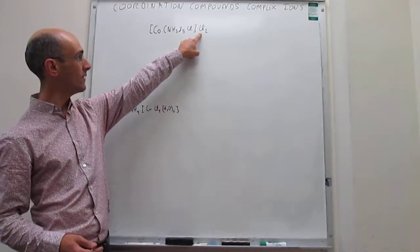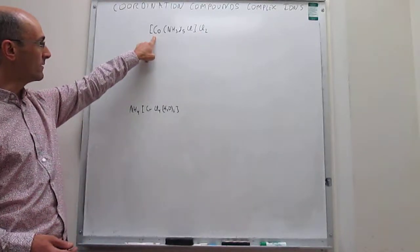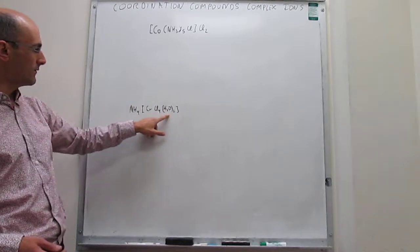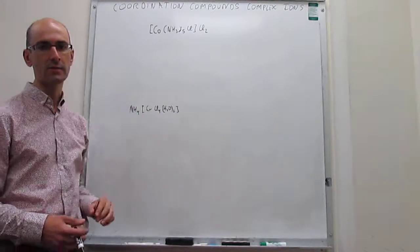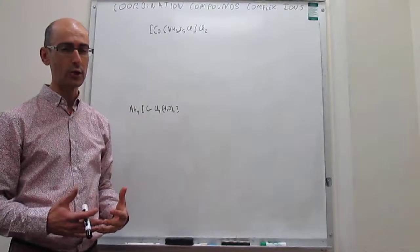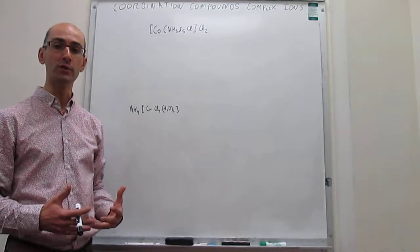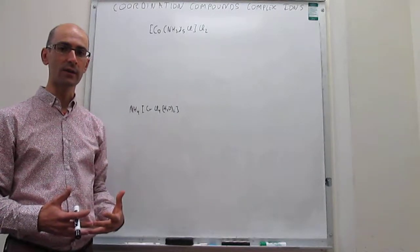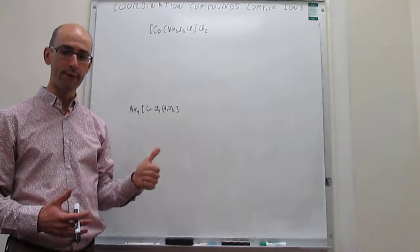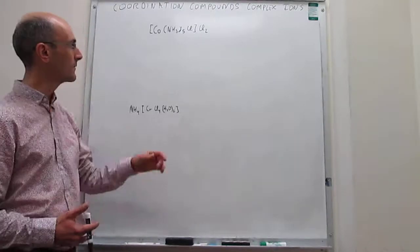In this case, those are the counter ions and this is the complex ion; and over here you have the complex ion and that is the counter ion. These are all ionic compounds, and you're going to name them exactly the same way as you would an ionic compound: first the cation, then the anion.